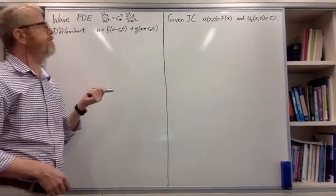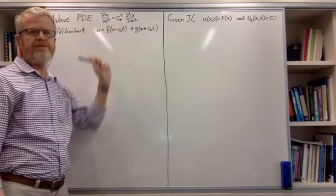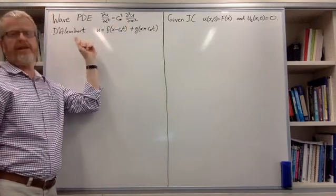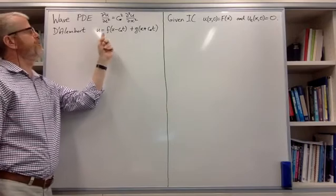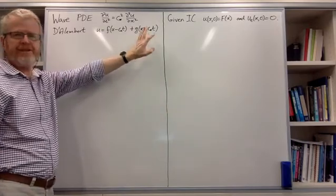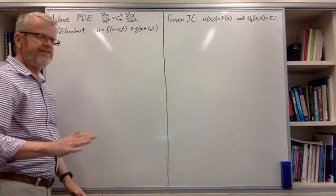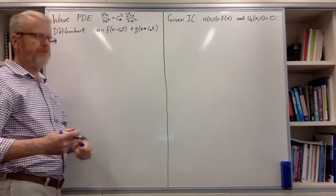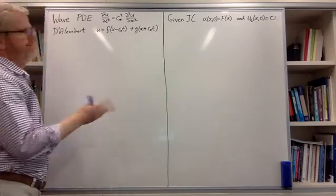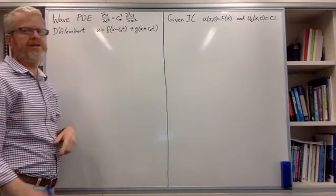Let's show that a general solution to the wave partial differential equation is given by the d'Alembert solution: u is f of x minus c-star t, plus g of x plus c-star t, for any twice differentiable functions f and g. It's simply a matter of substituting this u into the equation.